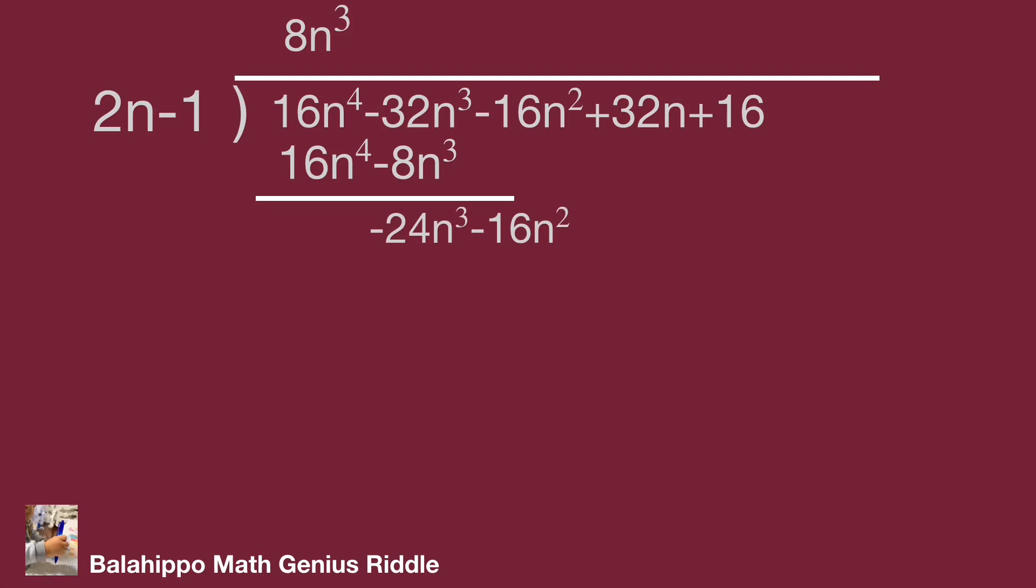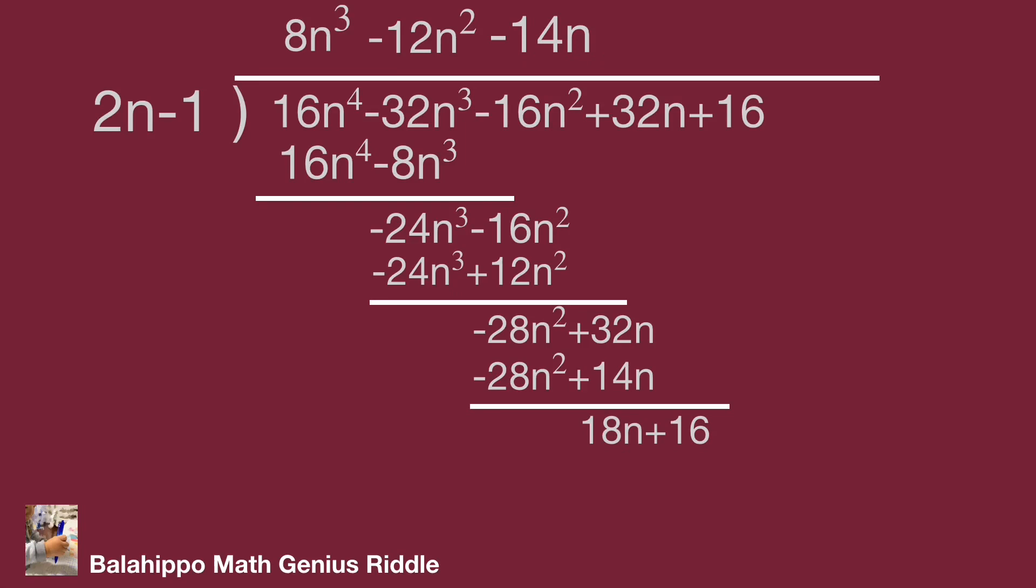Next to get the quotient minus 12n squared. Same process: get quotient minus 14n and plus 9. 9 times 2n minus 1 equals 18n minus 9. Finally, the remainder is 25.